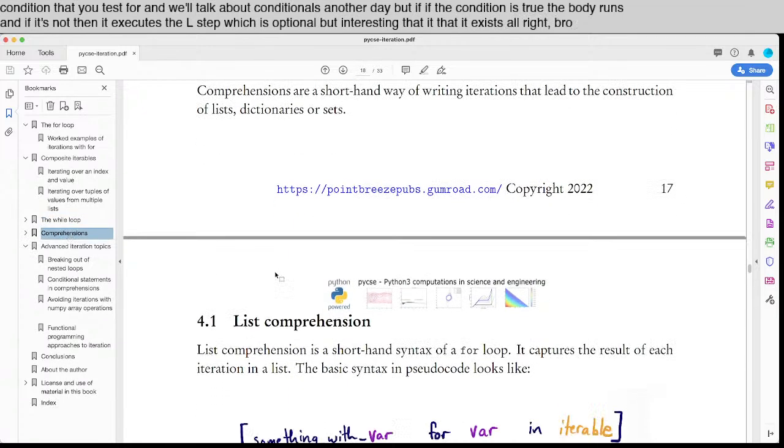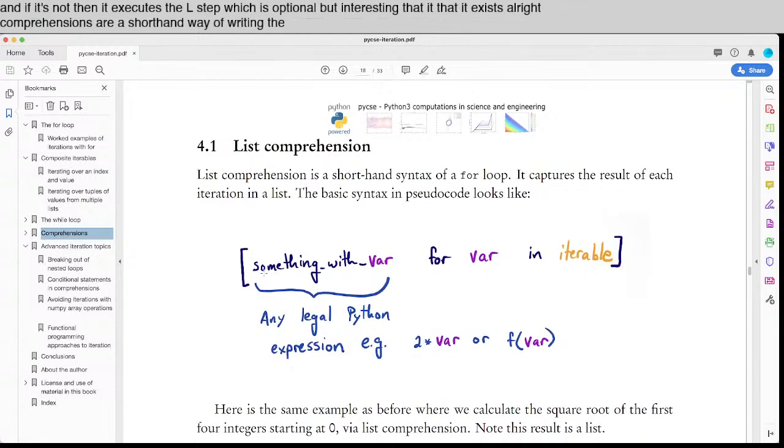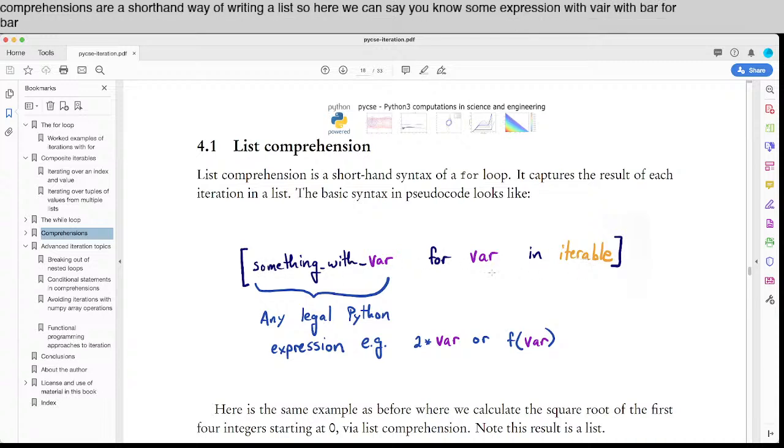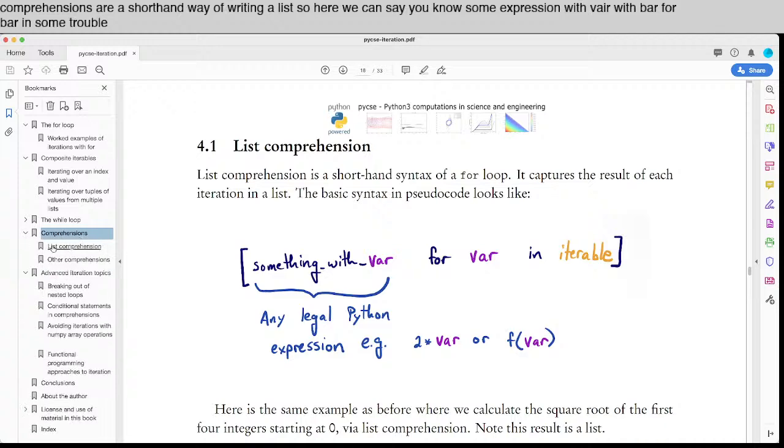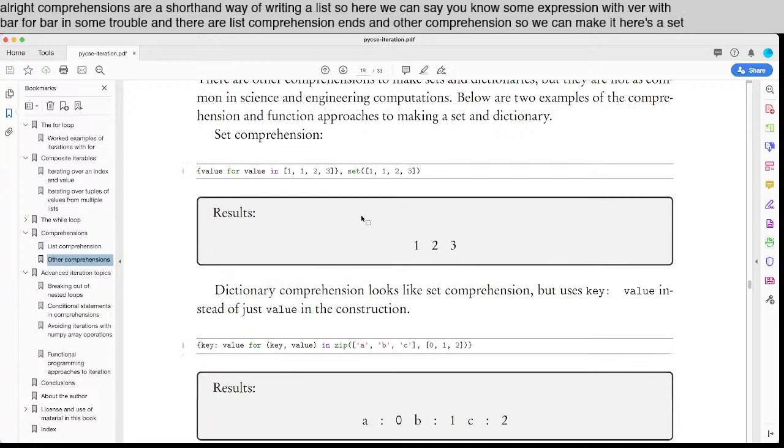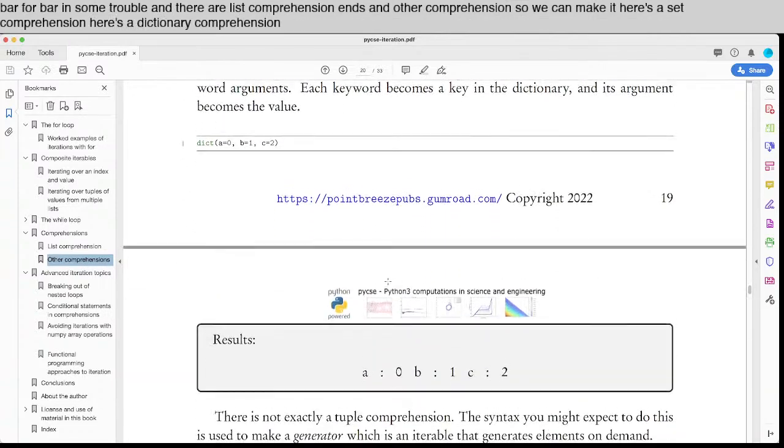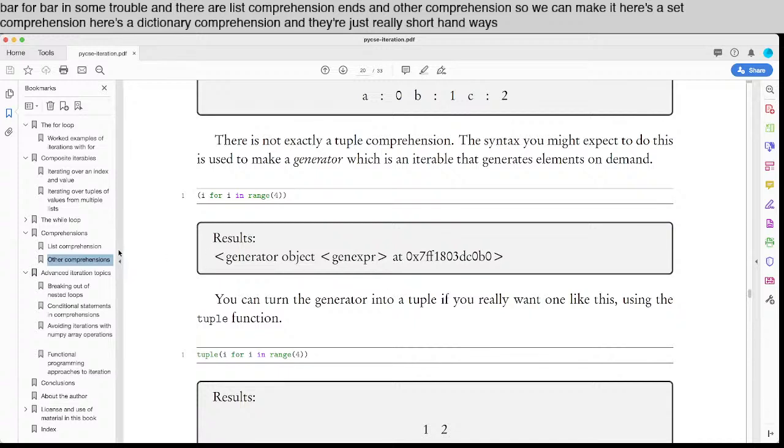All right, comprehensions are a shorthand way of writing a list. So here we can say, you know, some expression with var for var in some iterable. And there are list comprehensions and other comprehensions. So we can make, let's see, here's a set comprehension. Here's a dictionary comprehension. And they're just really shorthand ways of writing those.